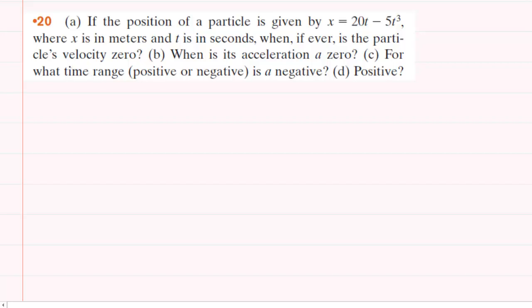In order to determine the time at which the velocity of this particle is equal to zero, we're going to start with the position function and transform it into a velocity function.